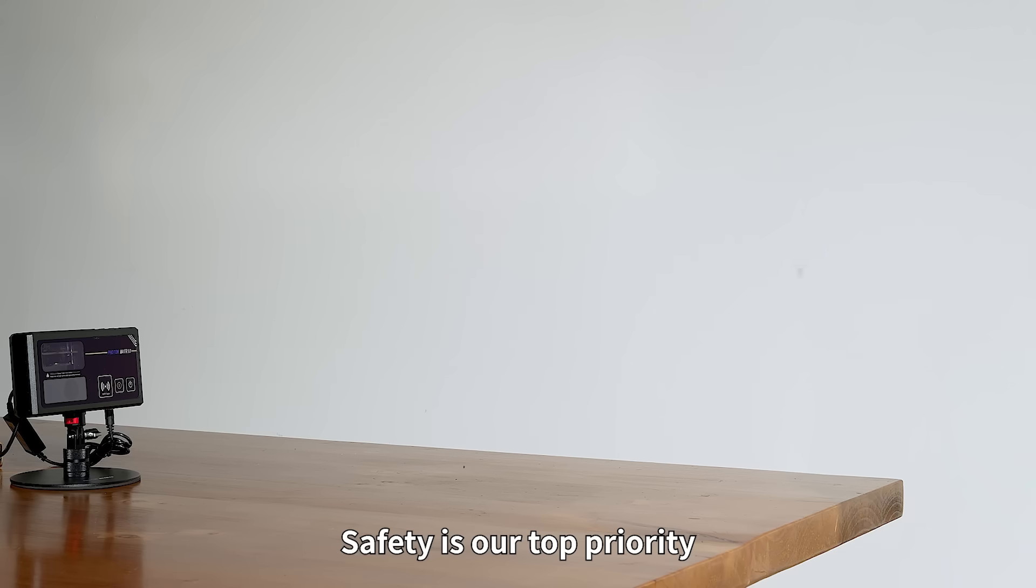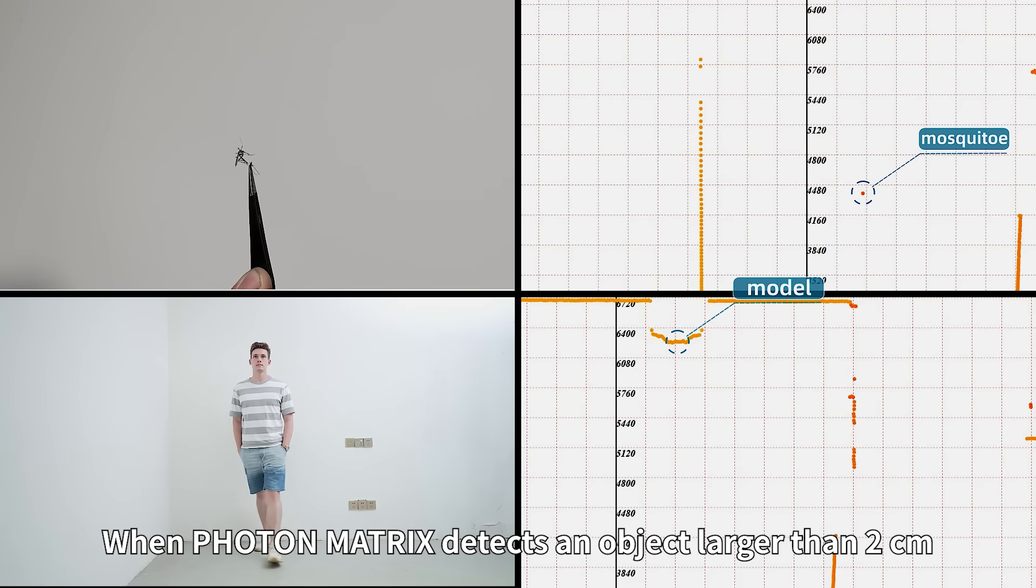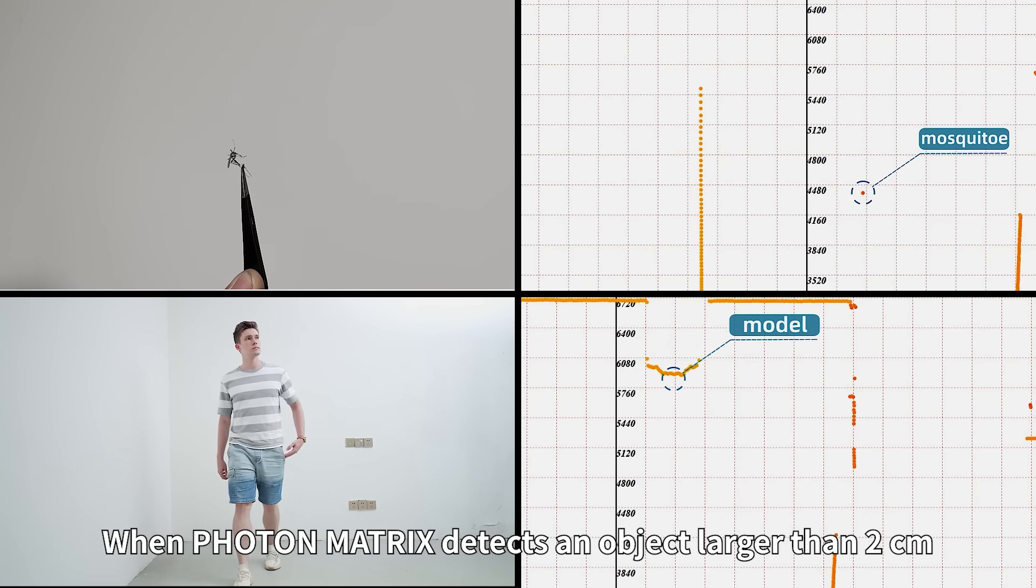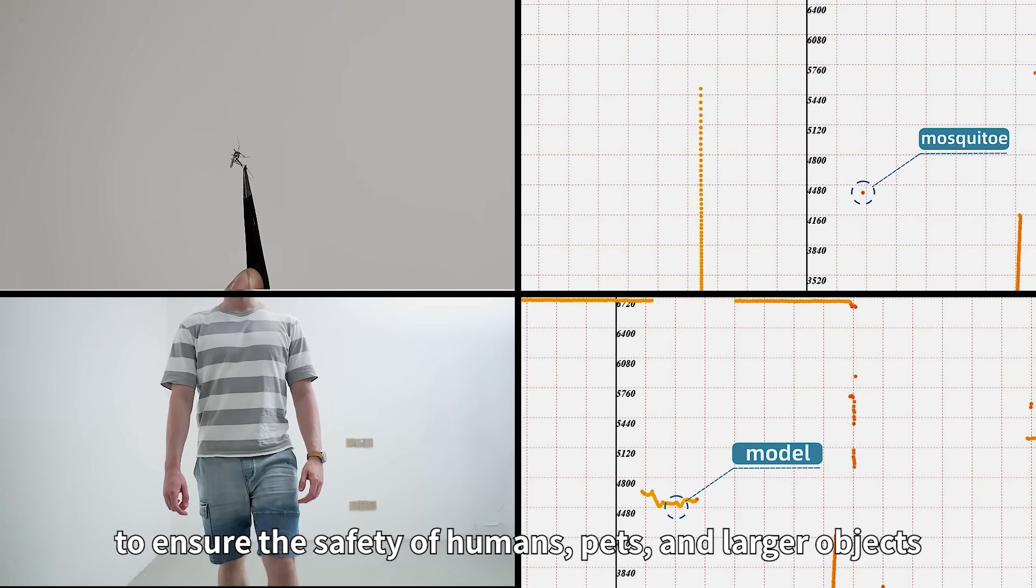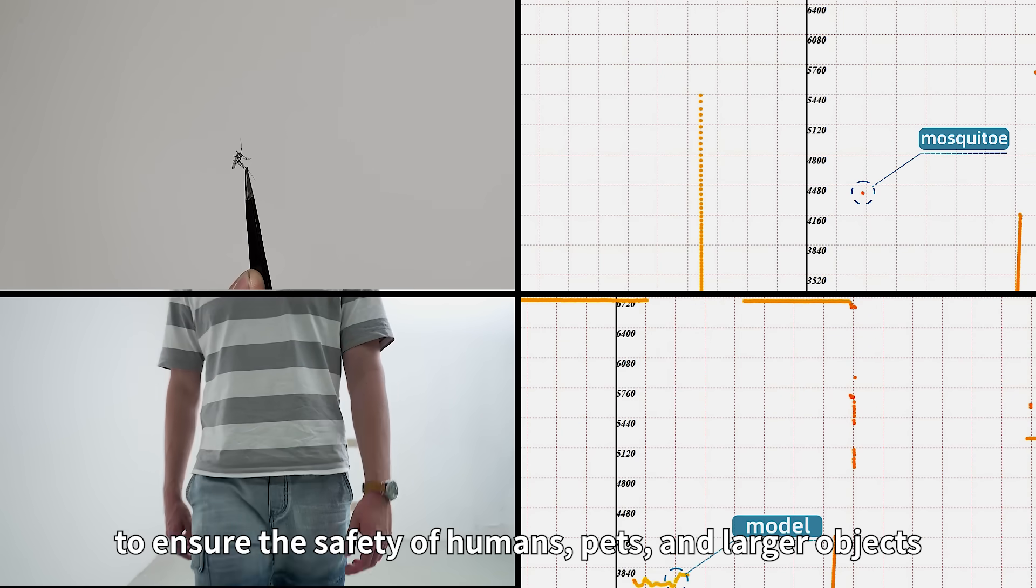Safety is our top priority. When Photon Matrix detects an object larger than 2 centimeters, it will immediately stop laser firing to ensure the safety of humans, pets, and larger objects.